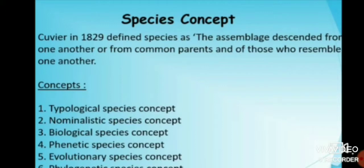Cuvier in 1829 defined species as the assemblages descended from one another or from common parents, and those who resemble one another.